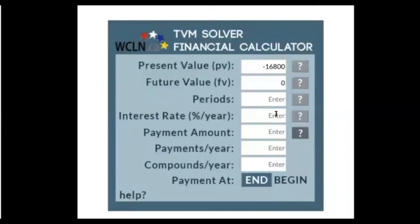We know our interest is 1.25%, so we write that as 1.25. The payment amount is going to be $400 because she's taking out $400 every two months. Vidir will be withdrawing the money every two months, so that's going to be six times a year. Likewise, our compound periods are also going to be six times a year because it's bimonthly, which means every two months.